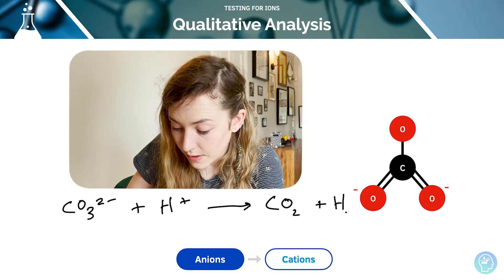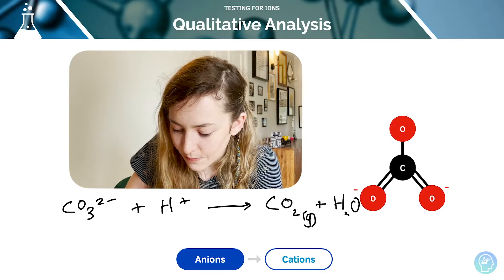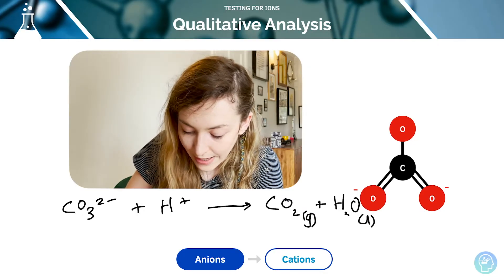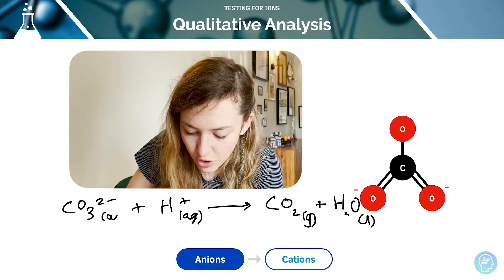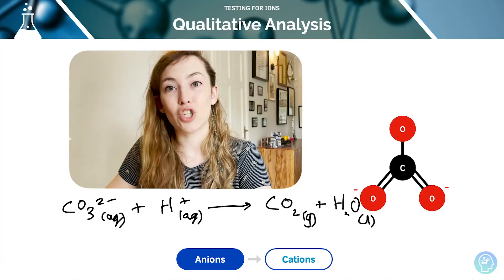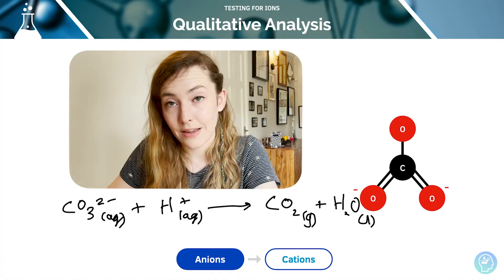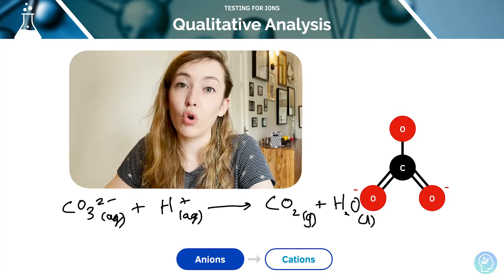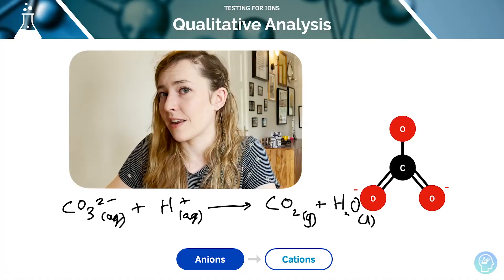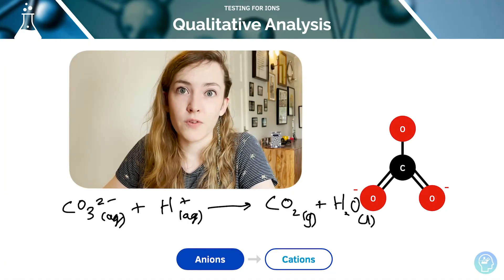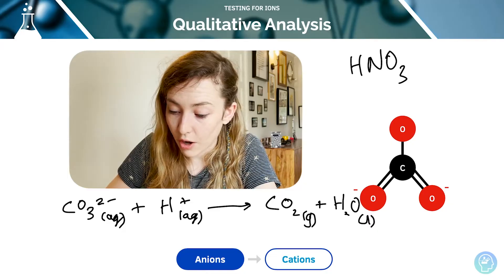When we select which acid, we tend to use nitric acid, because the nitrate ions that drops into the solution doesn't react later on with other tests. If we used a different acid like hydrochloric acid, we would then drop a load of chloride ions into the solution, and that might give us a positive result for a halide test later on, and that would be a false positive. So we do tend to use HNO3, nitric acid.